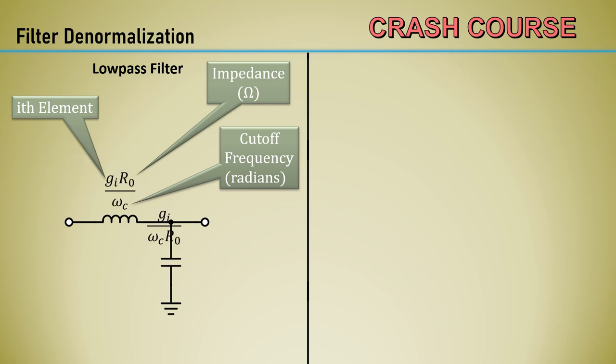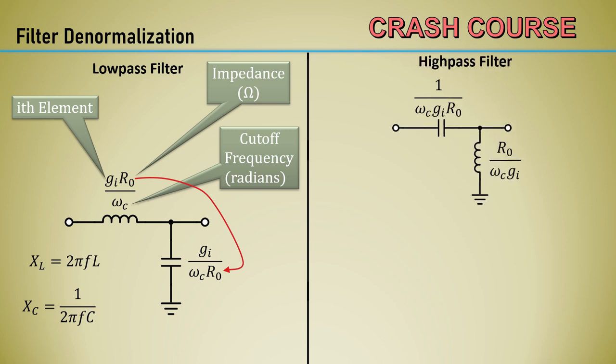For the shunt capacitor, the difference is the element value is divided by R0. Since the reactance of an inductor is proportional to the inductance, the element values are multiplied by the scaled impedance. Conversely, since the reactance of a capacitor is inversely proportional to the capacitance, the element values are divided by the scaled impedance. The high-pass filter is obviously the opposite topology with a series capacitor and shunt inductor. The difference here is the G sub i values are not in the numerator, but are in the denominator.